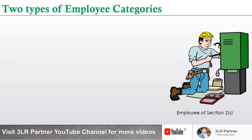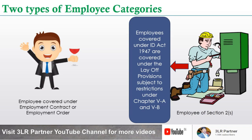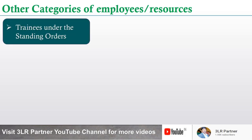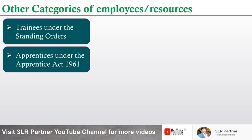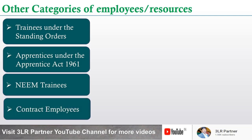There are two types of employee categories: workers covered under the ID Act 1947 section 2S, and employees covered under employment contract or employment order. Looking at today's circumstances, employers also use other categories of resources: trainees under the standing orders, apprentices under the Apprentices Act 1961, NEEM trainees under NCVT (National Council of Vocational Training), and contract resources. These are the four broad categories of resources any employer will have in his establishment.